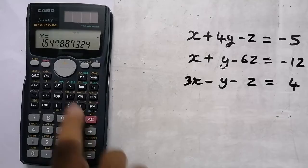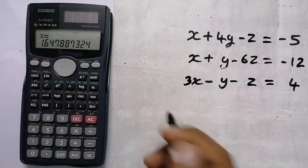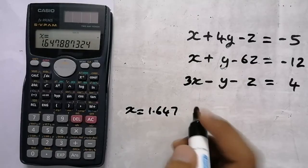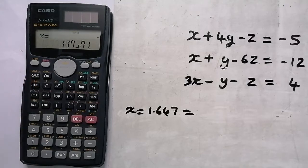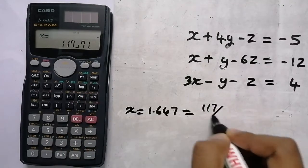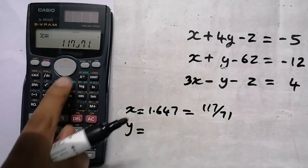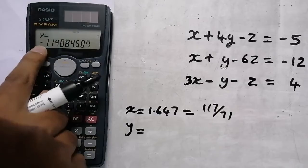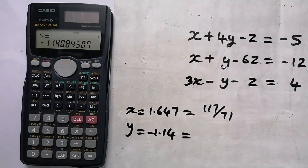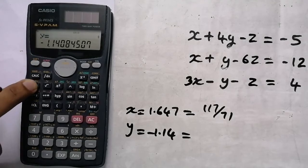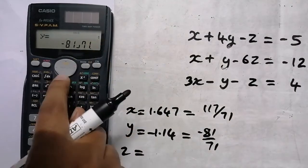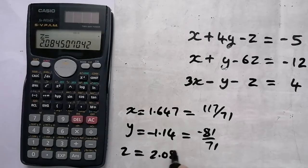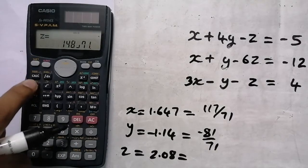Equal to 4. The value of x is 1.647 — that is a decimal. To convert it to a fraction, press Shift. The value comes out as 1.7, and the fraction is shown as shift AB/C: 50 minus 81 by 71.